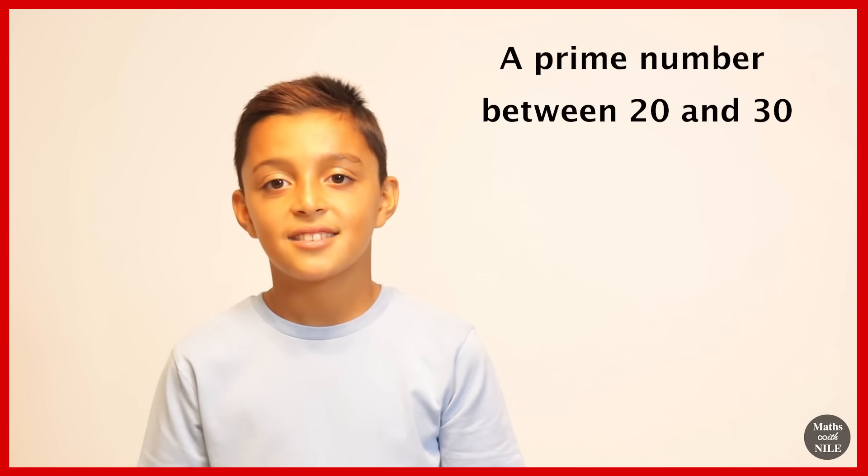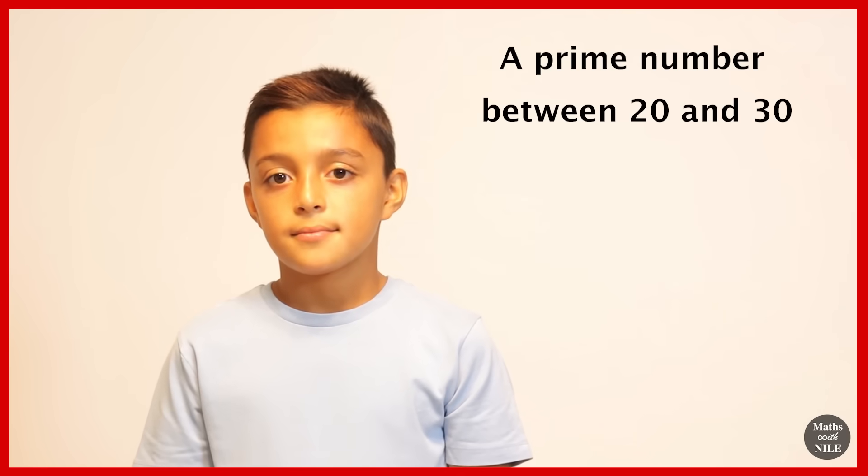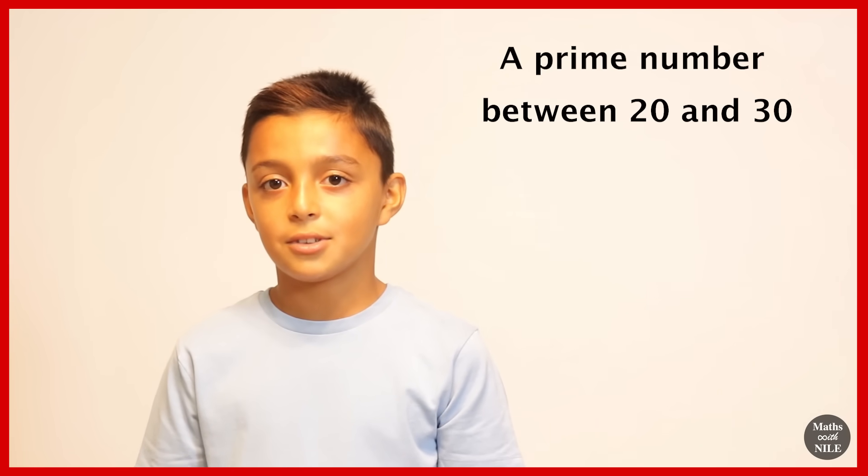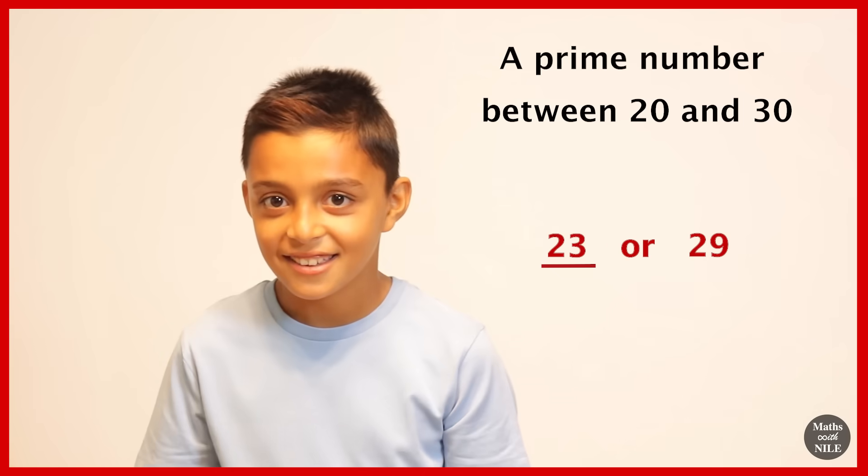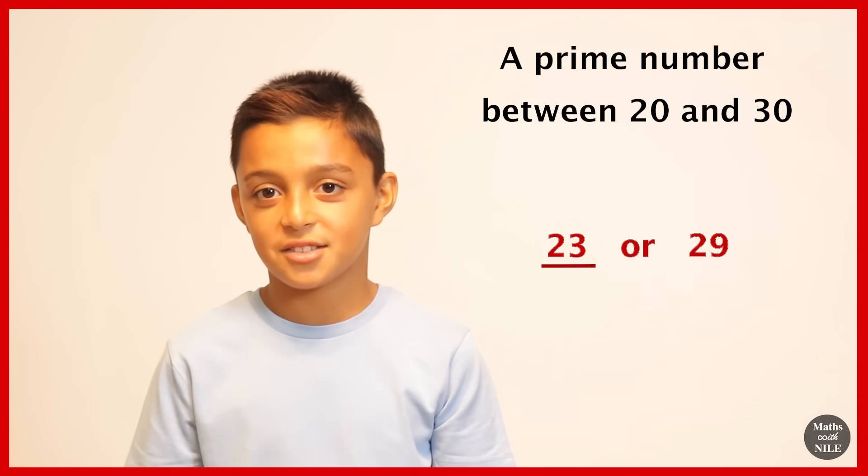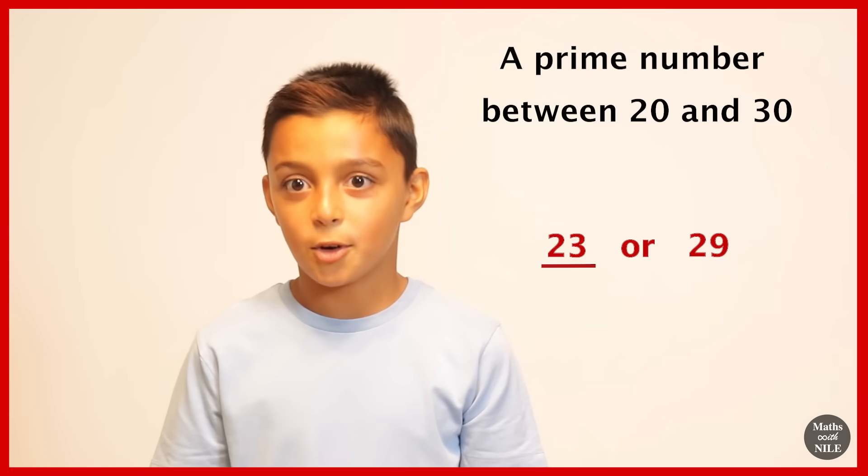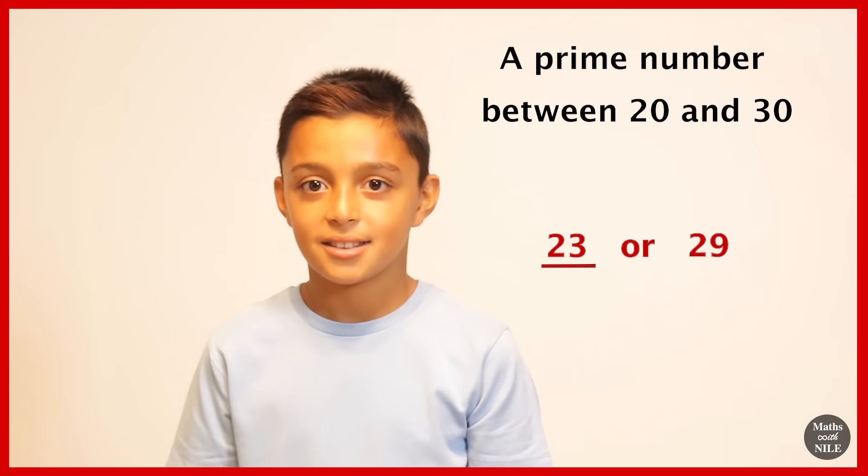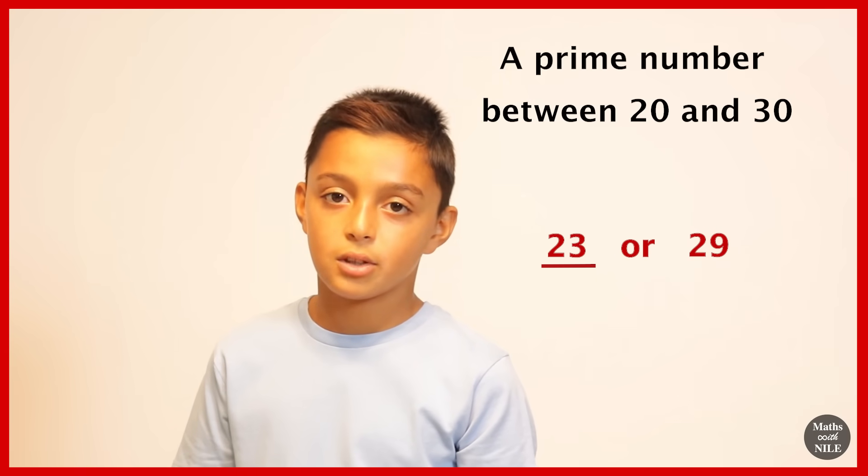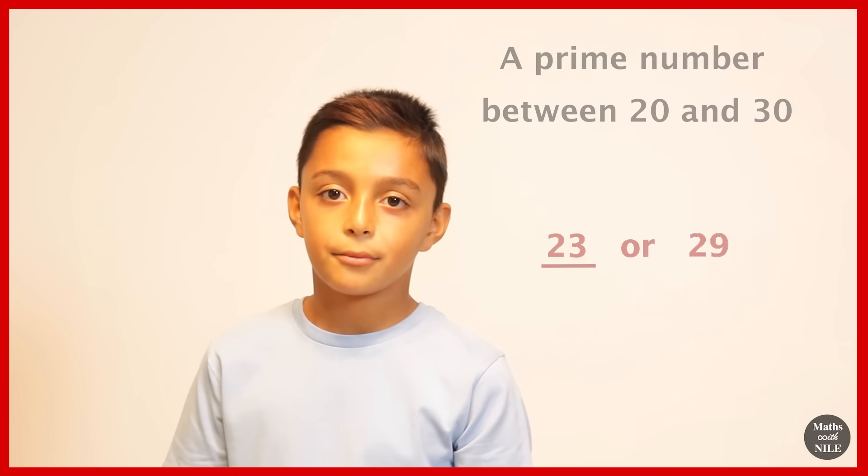Do you know any prime numbers Niall between twenty and thirty? Any one? Twenty-one. I mean twenty-three. Why is twenty-one not prime? Because seven can go into twenty-one three times. Brilliant. And why is twenty-three prime? Because only one and twenty-three can go into twenty-three. Brilliant. Okay.